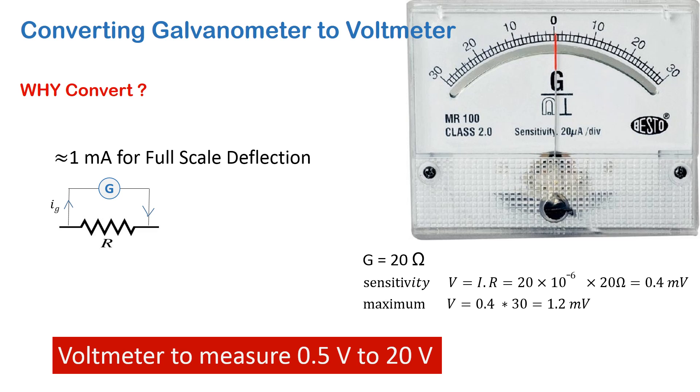Normally we will be required to measure higher voltages using a voltmeter, something like 1 volt, 2 volts, 3 volts, etc. So if more current is passed through this galvanometer, it will burn or the fuse of the galvanometer will burn.